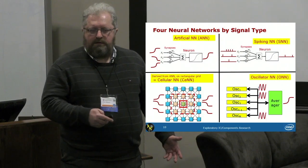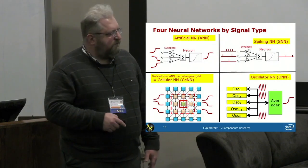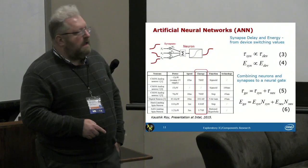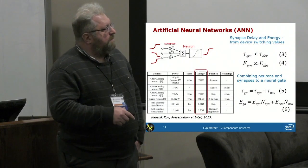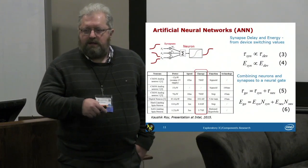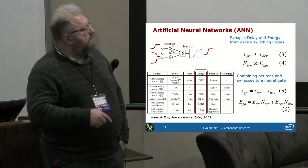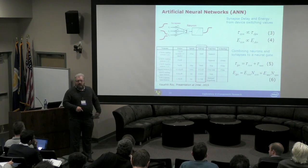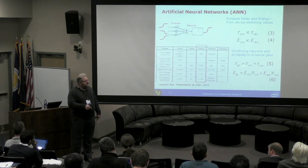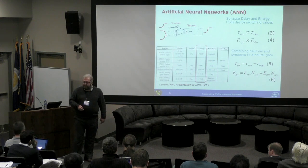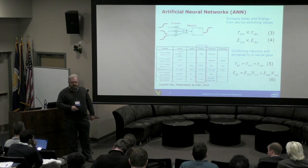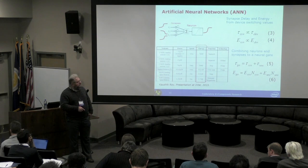We'll aim to make benchmarking estimates for all four types of networks. The way we do that is we start with values for the time and energy for each device, then build up to the full neural gate by summing the delay through the synapse and the neuron, and obtain the energy by summing the energy of operation of each synapse and each neuron. That is, in essence, the procedure of how we approach this.